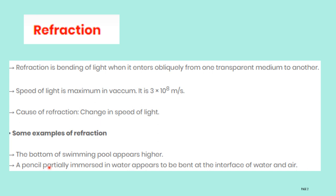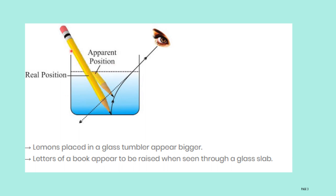A pencil partially immersed in water appears to be bent at the interface of water and air. If you dip a pencil in water, the part of the pencil immersed in water will appear bent due to the interface of water and air. Refraction takes place at the surface of water and air, because the speed of light changes when light rays enter from water to air. The pencil appears bent due to the presence of refraction.